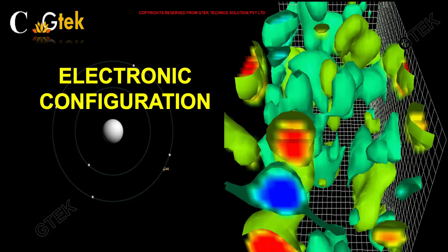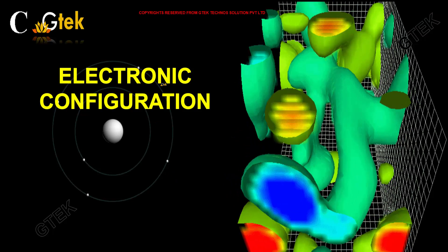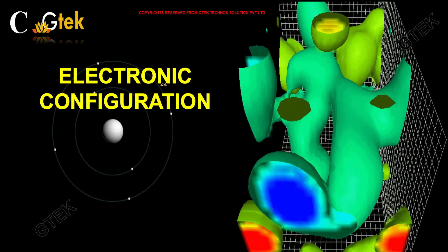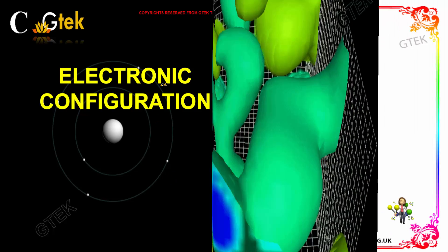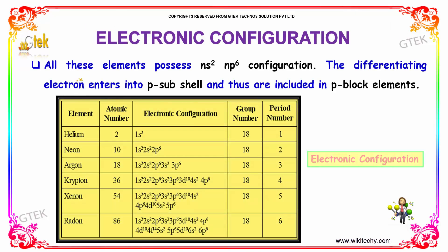Let's talk about the electronic configurations. All these elements possess Ns2, Np6 configuration. The differentiating electron enters into the P subshell, and thus they are included in P block elements.